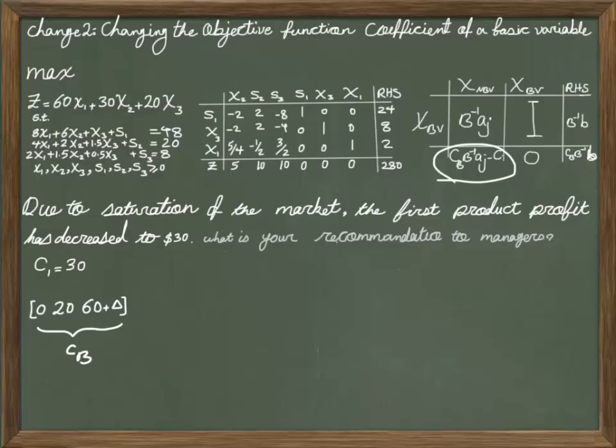In this vector, we followed the same order as we had in the simplex table. The first coefficient is related to the coefficient of S1 in the objective function, which is 0. X3 has 20 in the objective function.